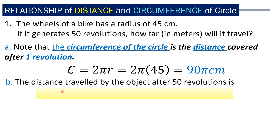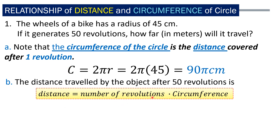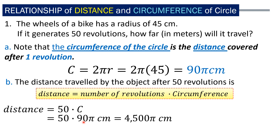Now the distance traveled by the object after 50 revolutions — we are referring to 50 revolutions, and 1 revolution equals 90π centimeters. So the distance is the number of revolutions times the circumference of the circle. We have 50 revolutions times 90π centimeters, and that product is equal to 4,500π centimeters.